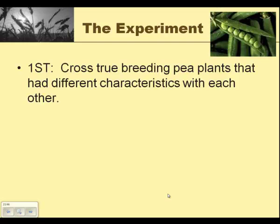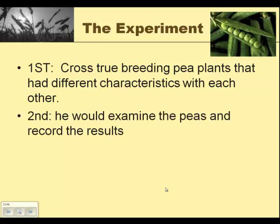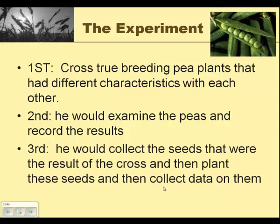Mendel's experiment. The first was to cross true breeding pea plants that had different characteristics with each other. Second, he would examine the peas and record the results. Third, he would collect the seeds that were the result of the cross and then plant these seeds and collect data on them. So eventually you'll hear me refer to the parent generation, the F1 or the first filial generation, and F2, the second filial generation.